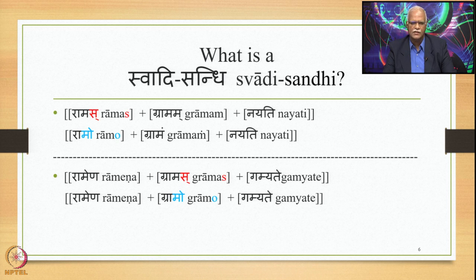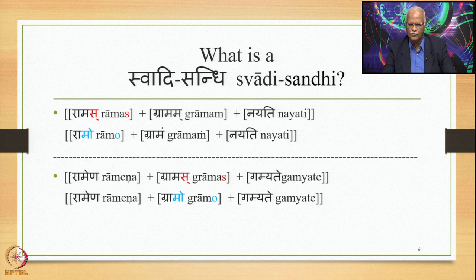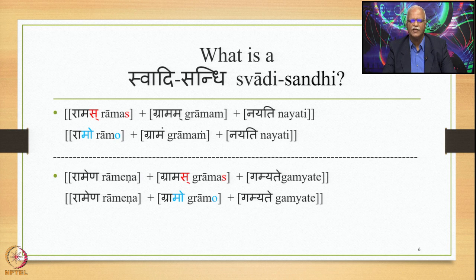Similarly, if you have Ramena, Gramas plus Gamyate, where Sa appears at the end of the second Pada followed by G, this Sa gets substituted by Ru first, then by U, and then A plus U becomes O. So we have Ramena, Gramo and Gamyate as the finally derived sentence. These are specific examples of Swadhi Sandhi.